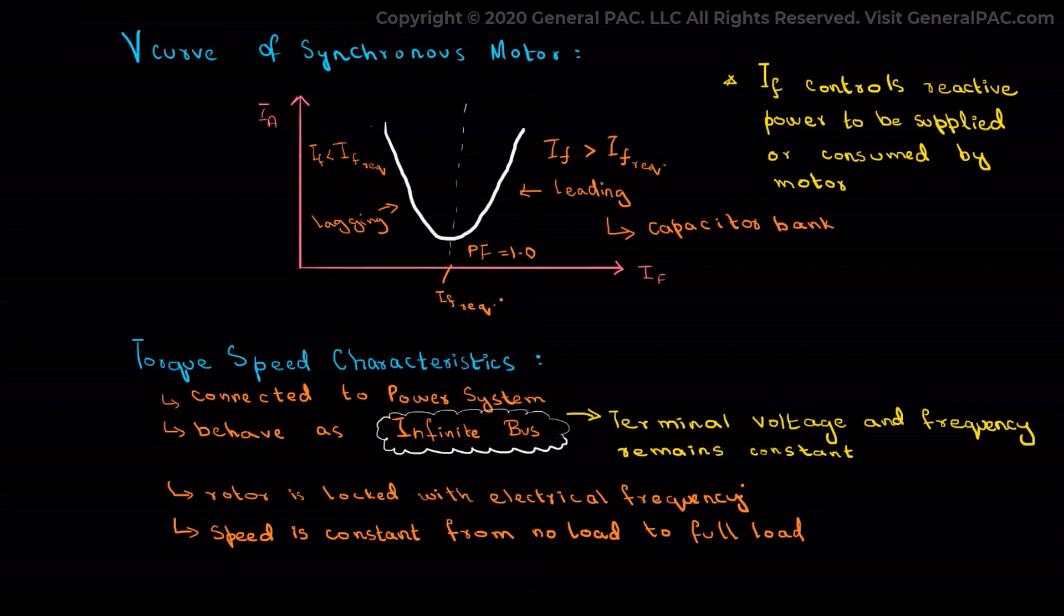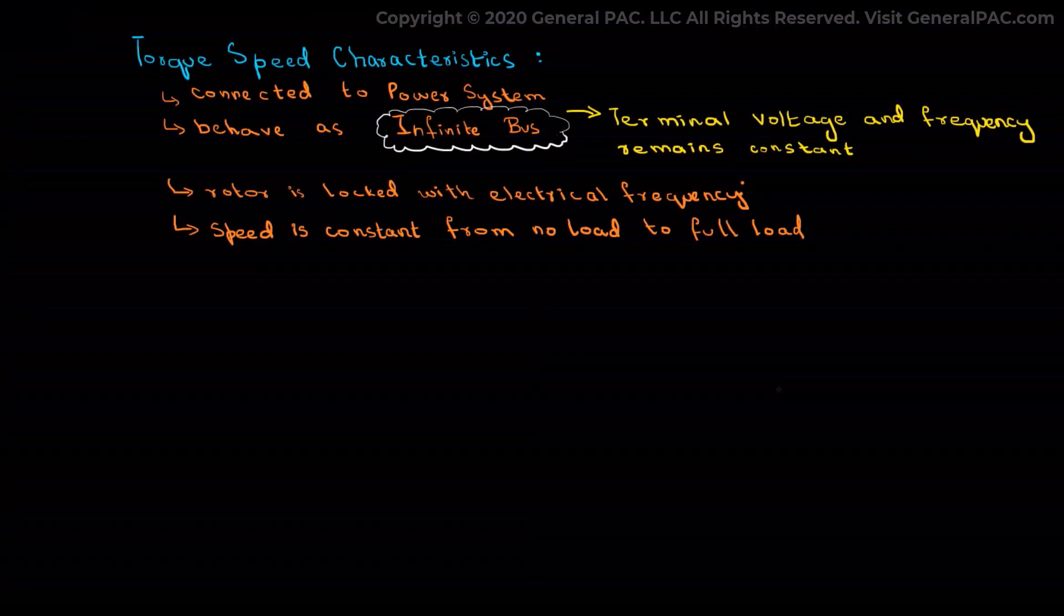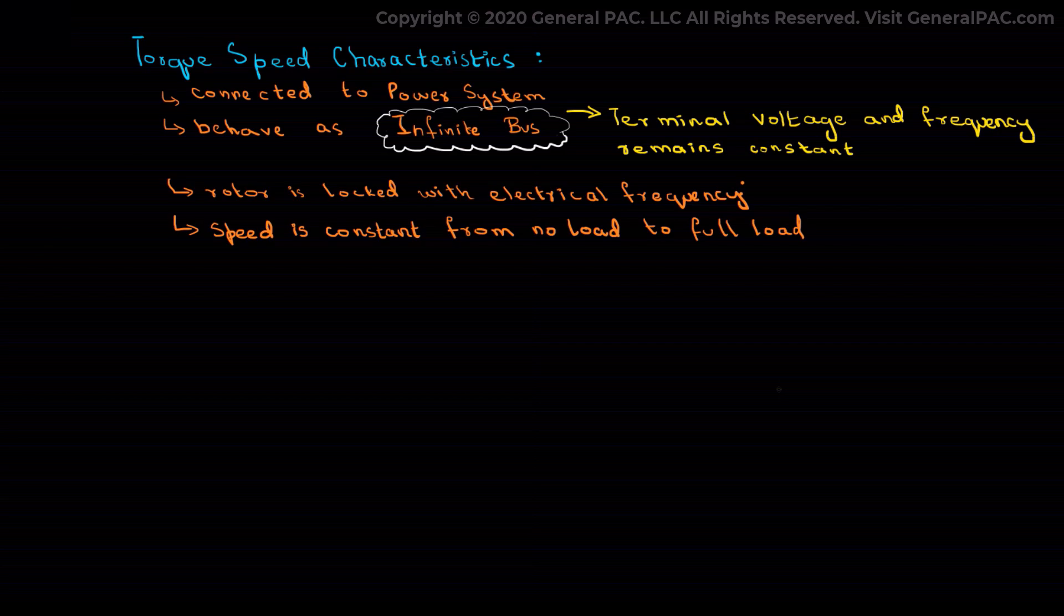Let me repeat this again because I feel like this is a very important point to make here: the speed of the synchronous motor is constant from no load to full load or even the pull-out torque, the maximum torque that the motor can supply. So we can conclude here that the speed regulation of a synchronous motor is essentially zero, as shown in the figure below.